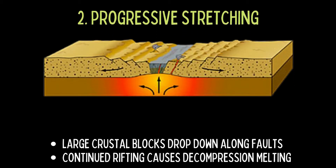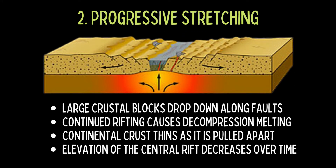The next stage of continental rifting is progressive stretching that causes large crustal blocks to drop down along faults, forming the continental rift. The drop-down blocks may form basins that can trap sediment and/or water. Continued rifting causes decompression melting, and the resulting magma from the mantle may solidify beneath the surface or erupt from volcanoes or along fissures on the surface.